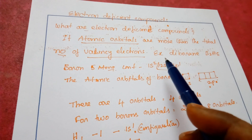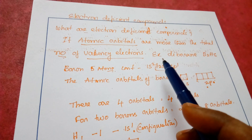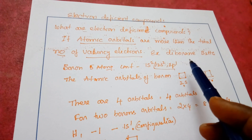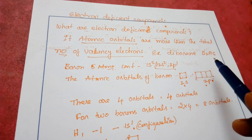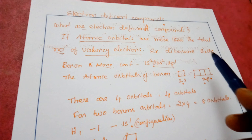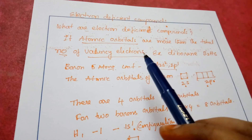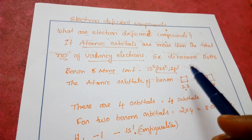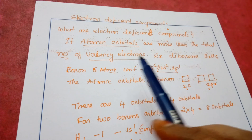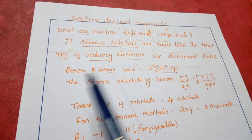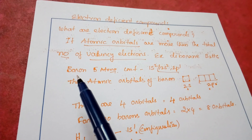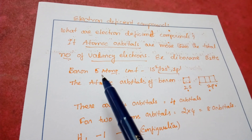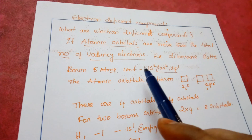The best example of an electron deficient compound is diborane, B₂H₆. Let us see how diborane is electron deficient. First, let us consider the atomic number of boron, which is 5.